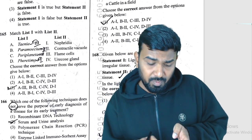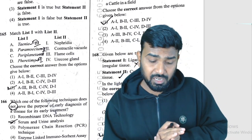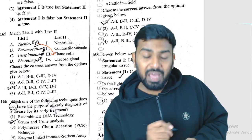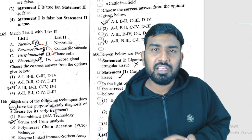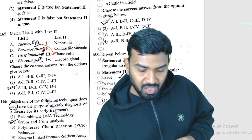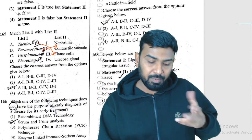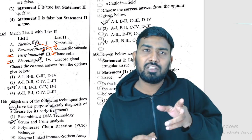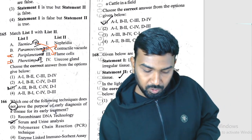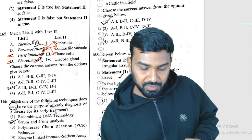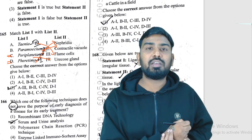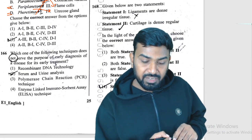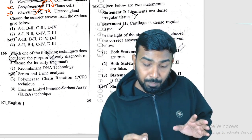Question 165: column matching of pathogens with excretory structures. Taenia (tapeworm) — flame cell. Paramecium and Amoeba — contractile vacuole. Periplaneta americana (cockroach) — Malpighian tubules (uricose glands). Pheretima posthuma (earthworm, Annelida) — nephridia. Match complete.